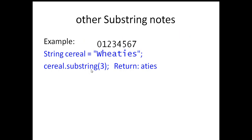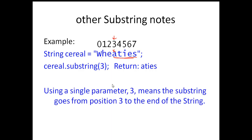Let's go to another example. If you go serial.substring(3), it returns A, T, I, E, S. Position 3 is the first letter, and then it goes all the way to the end. Using a single parameter means the substring goes from that position to the end of the string. That's something to remember.